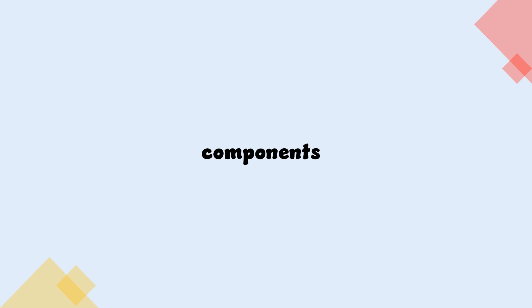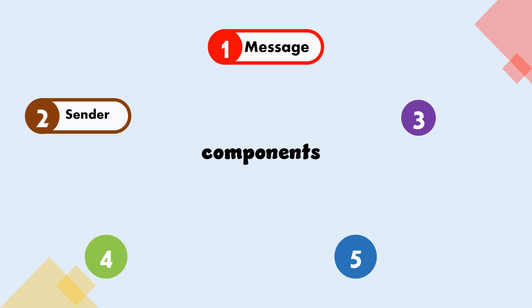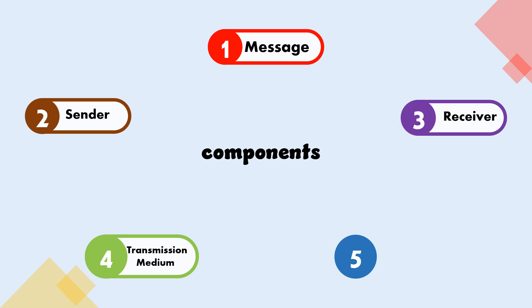Data Communication System Components. There are mainly five components of a data communication system: Message, Sender, Receiver, Transmission Medium, and Set of Rules — Protocol.